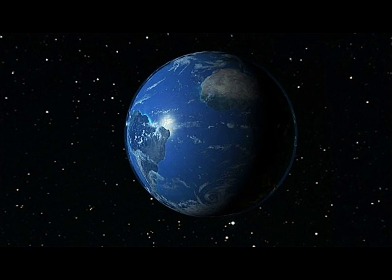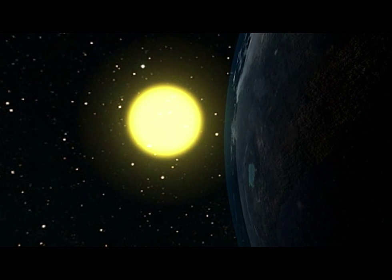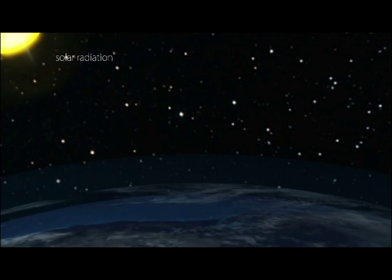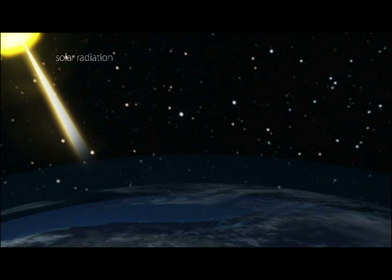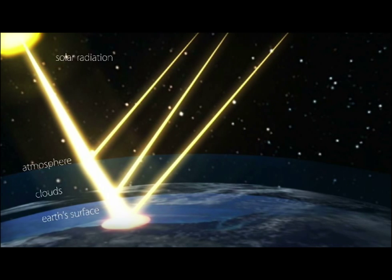Let's explain this greenhouse effect you hear so much about. Solar energy approaches the Earth as high-energy solar radiation. This radiation is reflected by the atmosphere, clouds, and surface of the Earth. What is not reflected is absorbed by the surface.